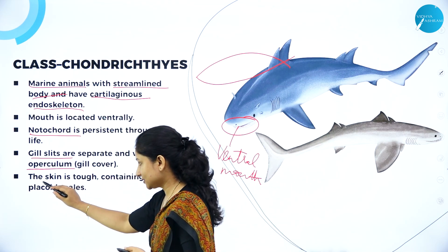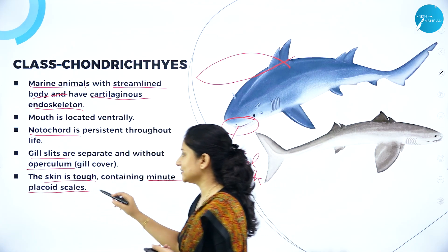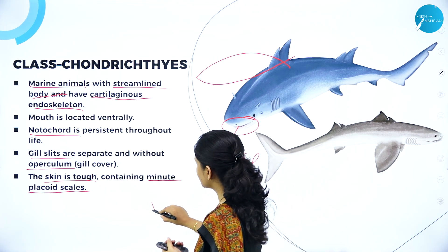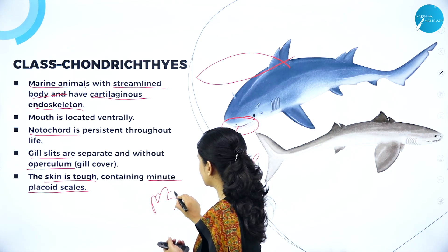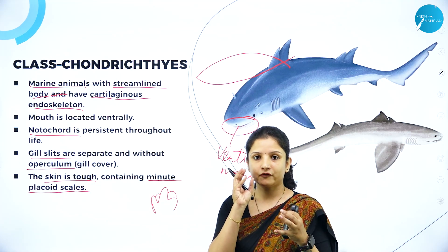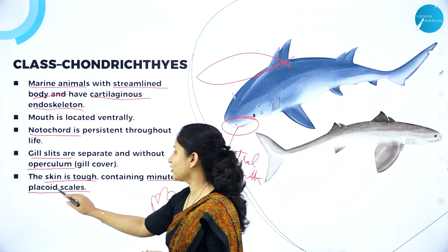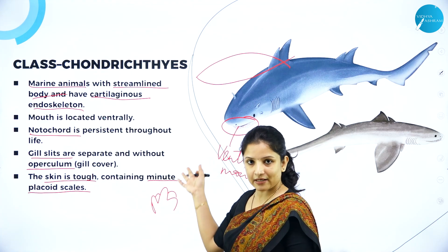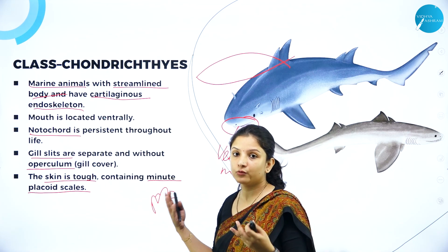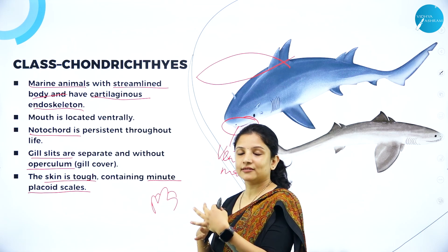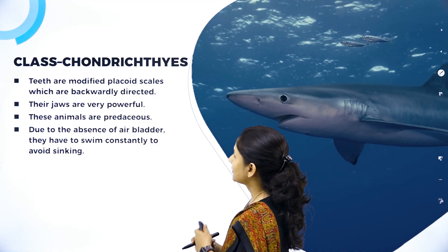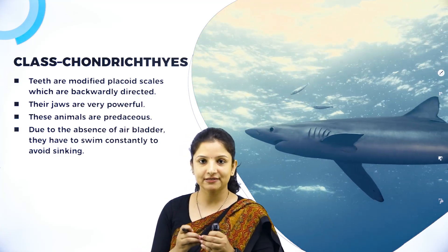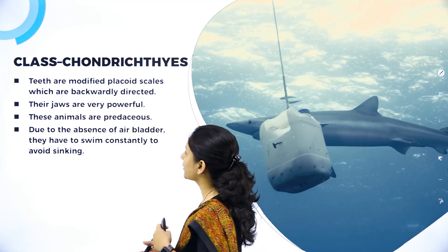Their skin is tough or rough and contains minute placoid scales. Placoid scales are present in Chondrichthyes, whereas Osteichthyes have cycloid and ctenoid scales. Placoid scales look exactly like a tooth — like the crown of a molar. The teeth are also modified placoid scales. Cyclostomata didn't have jaws, but Chondrichthyes have jaws with teeth, which is why they are placed separately and not grouped with Cyclostomata.